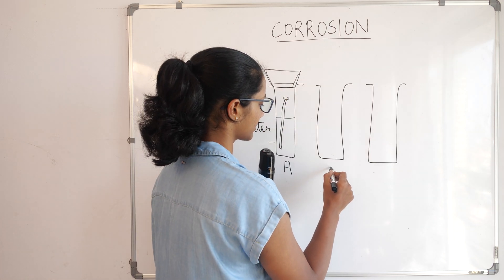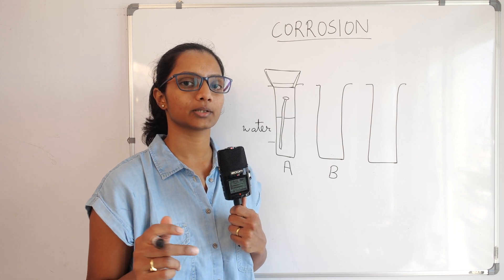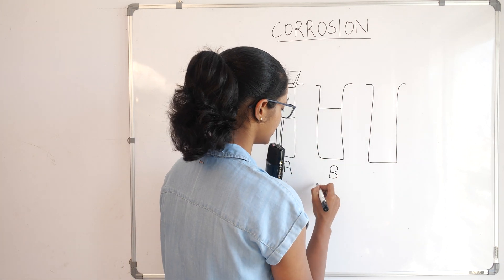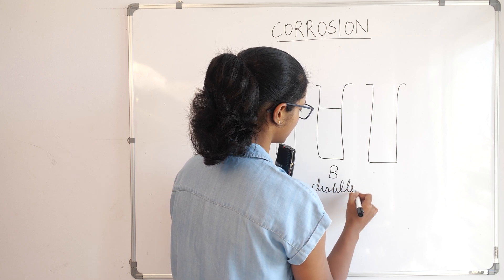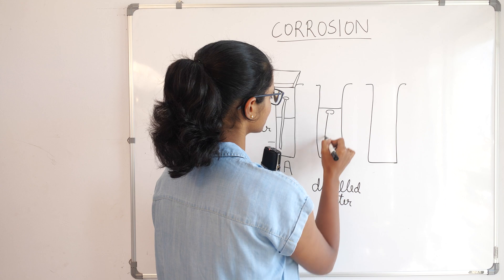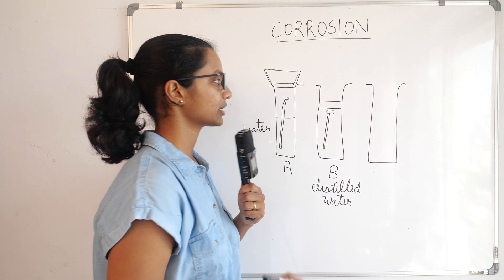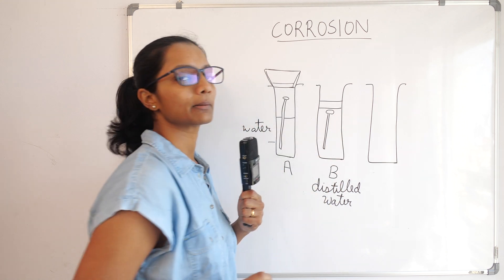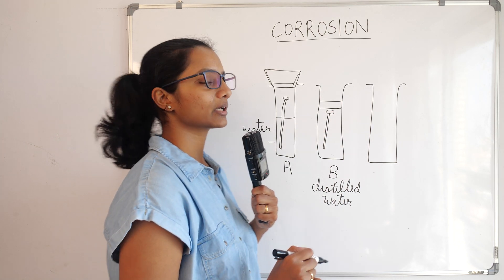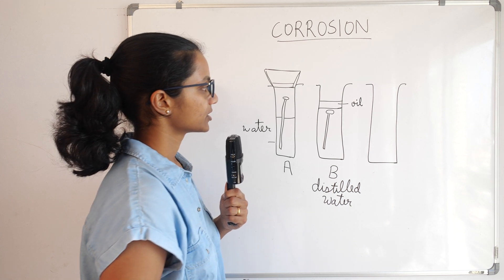In test tube B, we will add distilled water. Distilled water is boiled and distilled to eliminate the air present in the water. We will also add oil to this test tube. Oil and water are immiscible solvents — they don't mix and oil floats on top. This is to avoid any air coming in contact with the iron nail.